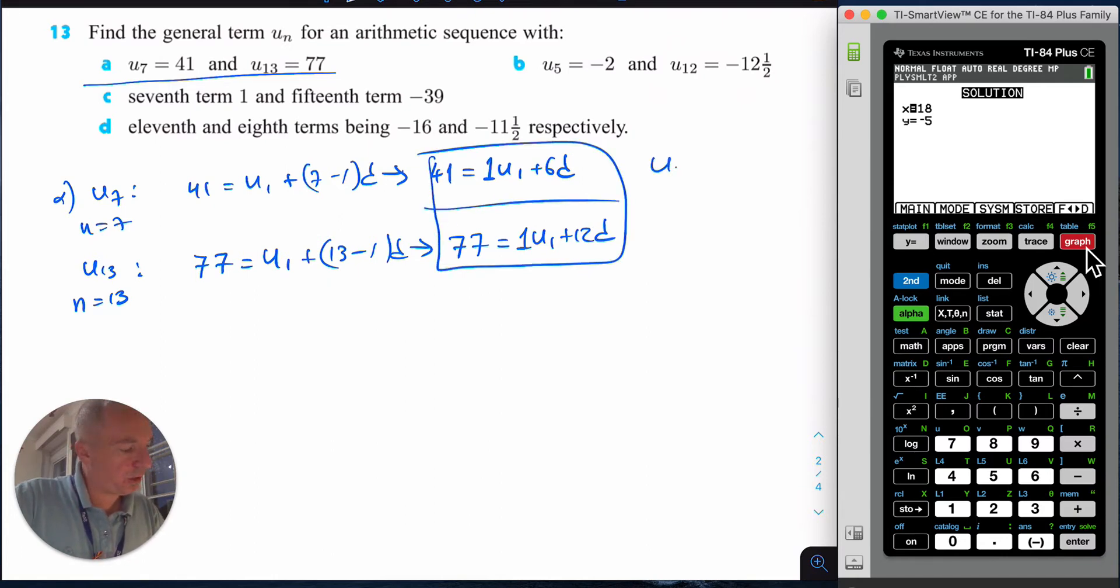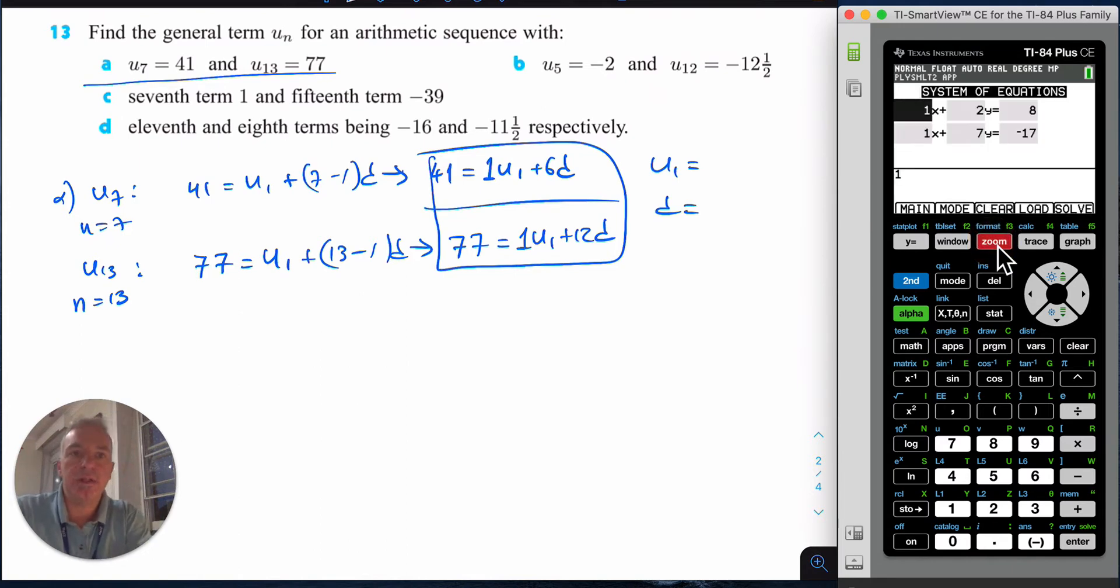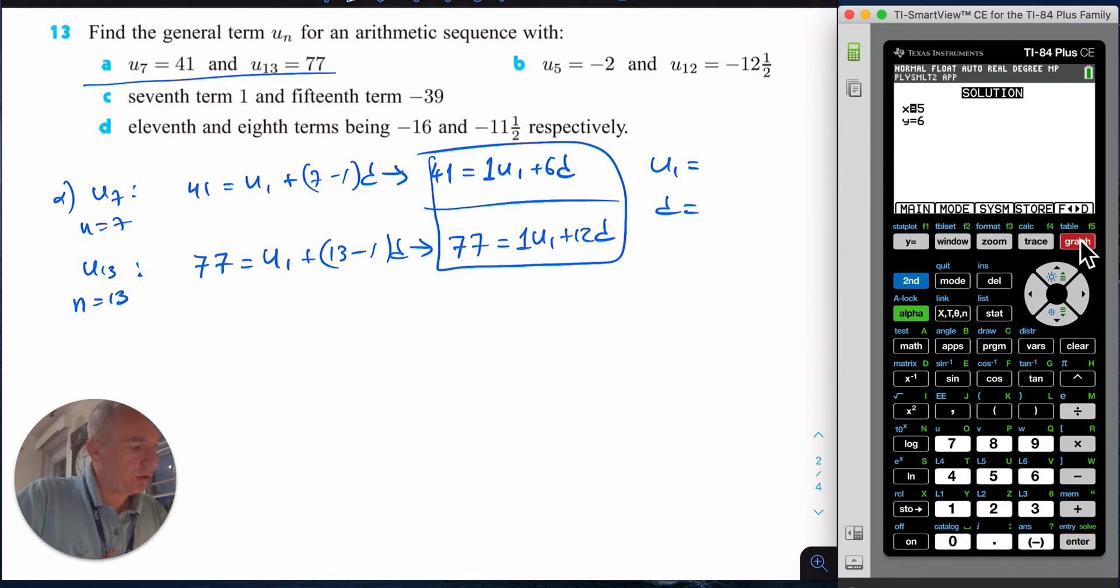I'm going to go to my system. Let me show you a trick: I press the system button and enter 1x + 6y = 41, then 1x + 12y = 77. When I solve, I find that u1 = 5 and d = 6. So the general form is un = 5 + (n-1) times 6.